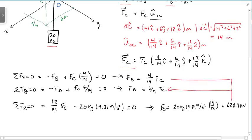So let's go ahead and do that. FA is equal to 6 over 14 FC is 6 over 14 times 228.9 kilonewtons. And that gives me 98.1 kilonewtons.